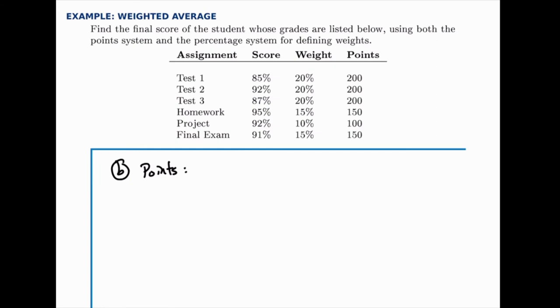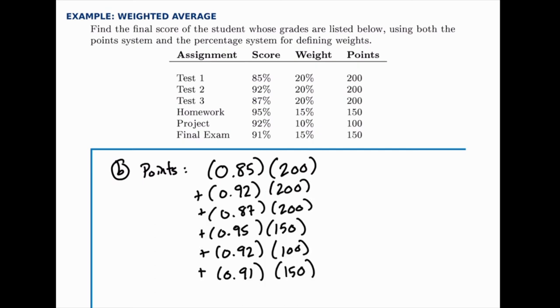but this time we have to do two steps where first we multiply their score, so for the first category they got 85% times the number of points they got, and then do that for all of them. Once we multiply and add all those up we get 899 points.